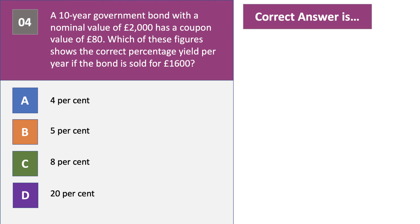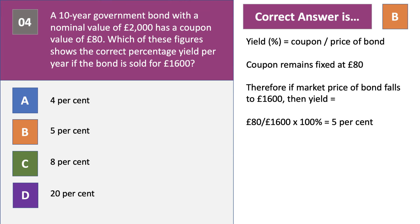The coupon is the interest. The yield is the coupon divided by the market price of the bond. The correct answer to question four is B. The yield as a percentage is the coupon divided by the market price of the bond, expressed as a percentage. The coupon is fixed — it stays at 80 pounds; it's a fixed interest security. If the market price of the bond falls to 1,600 pounds, then 80 over 1,600 gives a yield of 5%. The answer is B.